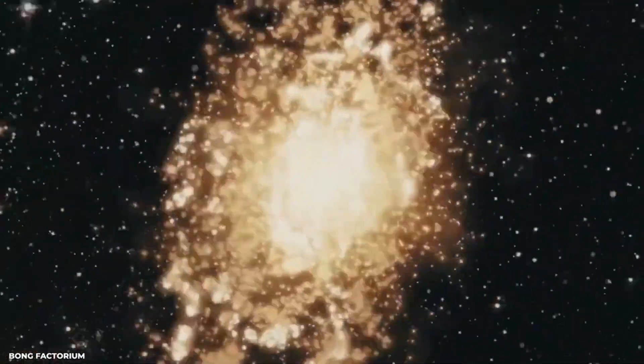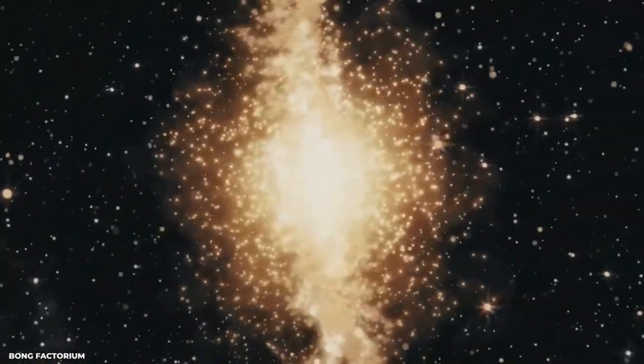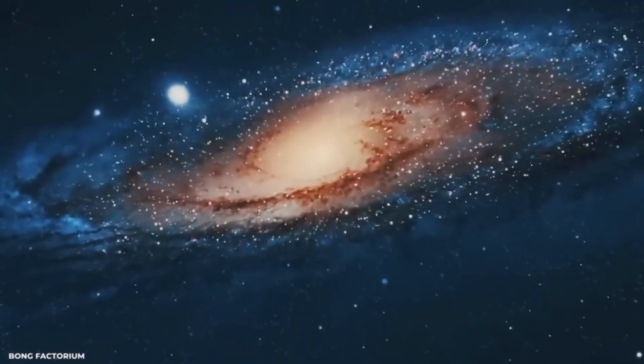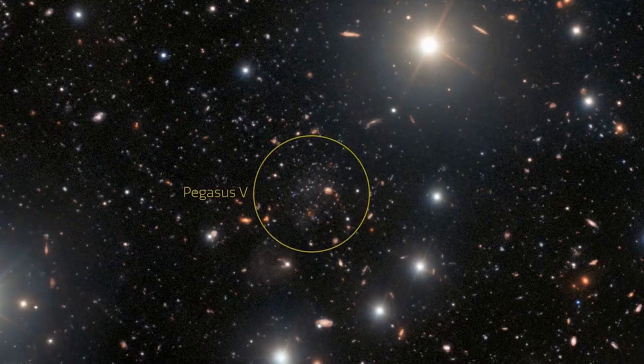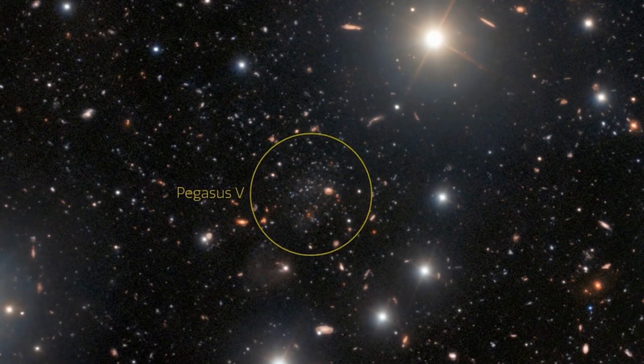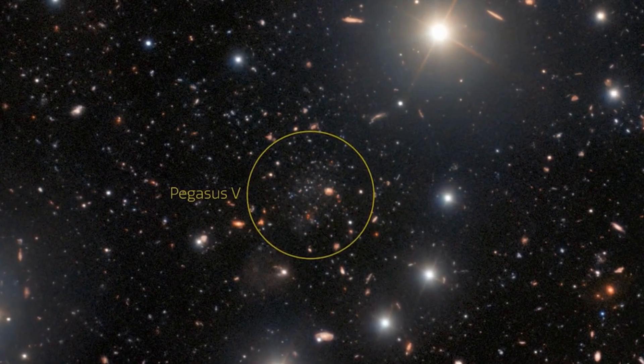Typically, dwarf galaxies don't survive long due to being consumed by larger neighbors. Andromeda's companion is considered a priceless artifact from the early universe. But the discovery of Pegasus 5 suggests that more dwarf galaxies may be hiding in plain sight.